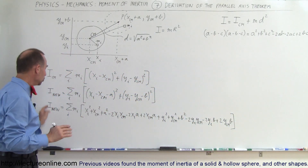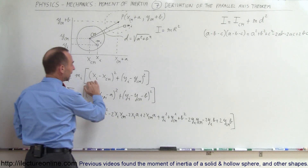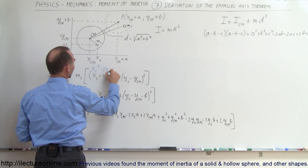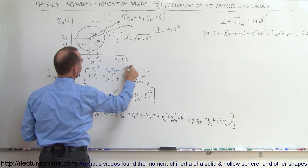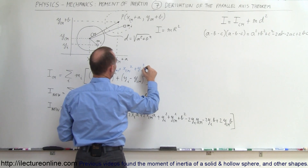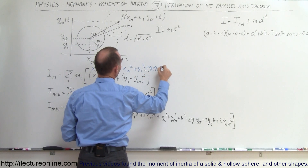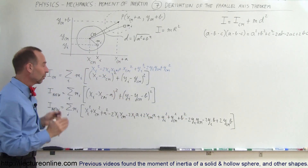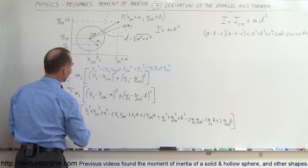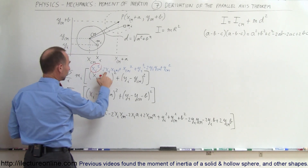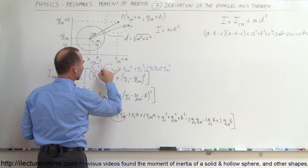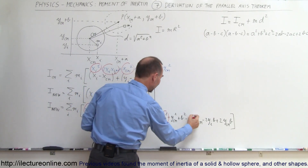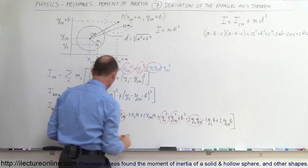So that is the expanded new moment of inertia. Now notice that six of those terms — xᵢ² − 2xᵢ·x_cm + x_cm² + yᵢ² − 2yᵢ·y_cm + y_cm² — are exactly the same as the terms in I_cm. We can identify them: xᵢ² here, −2xᵢ·x_cm here, x_cm² here, yᵢ² here, −2yᵢ·y_cm here, and y_cm² here. Those six terms represent I_cm.